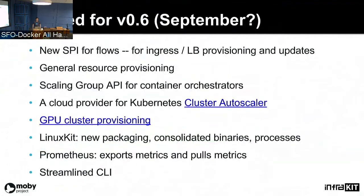Some things we're looking at for version 0.6, which we're currently targeting around the September timeframe: number one, a new service provider interface for flows. Currently we're focused on managing clusters with auto-scaling groups and rolling updates, but we want to expand coverage of our capabilities in managing infrastructure. One logical next step is to think about flows — otherwise known as ingress or load balancer provisioning and updates.